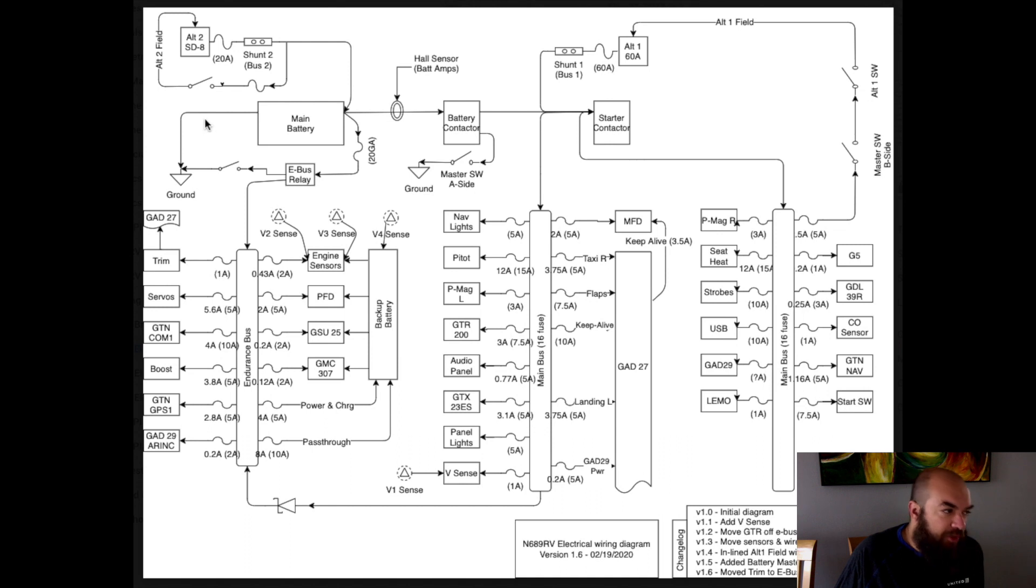But I would turn this one on and I would turn off the master switch to turn off the alternator, and then turn off the battery contactor to turn off the main bus, which has all of these items. So you notice on the endurance bus, I have trim for the aircraft, so pitch and roll trim. I have the servos for the autopilot. I have com one for the GTN, GPS one for the GTN. You'll notice that the GTN actually has three different power inputs: com one, GPS one, and GTN nav over on the right side over here.